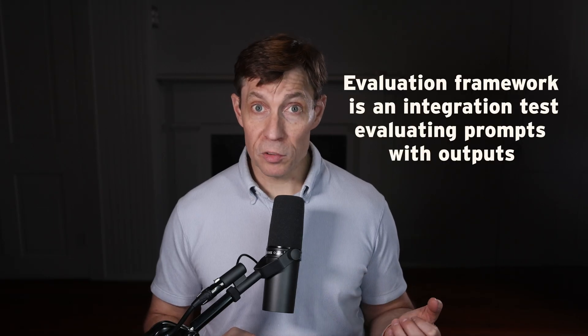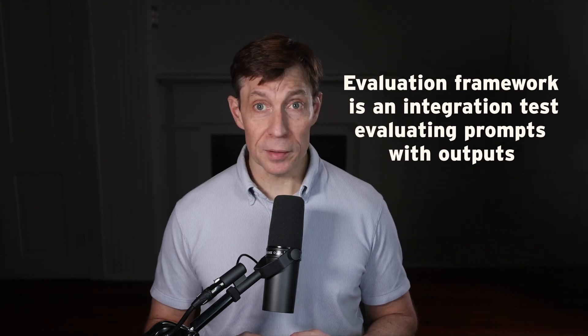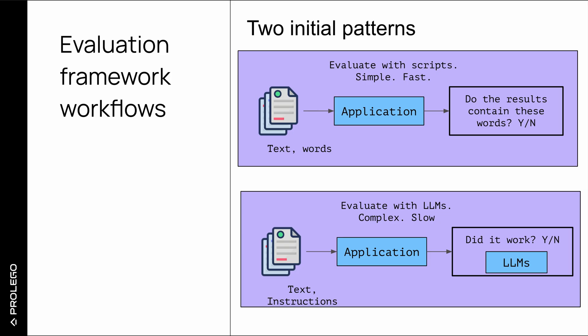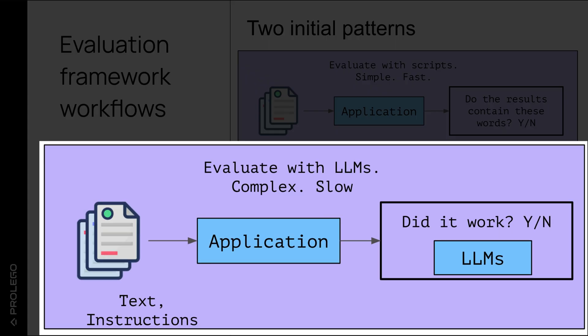An evaluation framework is analogous to a systems integration test. It is a series of inputs — usually data sets or user prompts — paired with a series of expected outputs. There are two general approaches: you can write scripts to check for specific words in the output, which is faster and ideal for evaluating simple questions. Alternatively, you can send the output and instructions to an LLM for evaluation. This approach is slower, but it allows for more complex analysis.